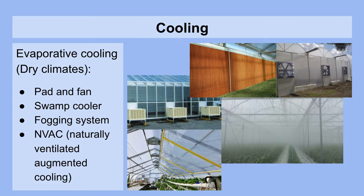An interesting development recently has been the NVAC system, or Naturally Ventilated Augmented Cooling. This works by misting water over a secondary membrane inside the greenhouse, which causes the air surrounding it to pick up moisture, cool down, and drop to the bottom of the greenhouse, where it moves through the greenhouse and raises again towards the vents when it picks up heat. It's a very low energy system.